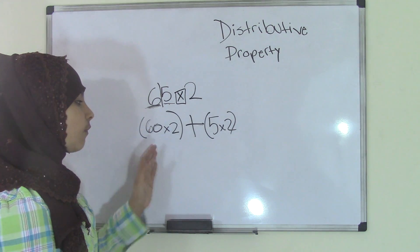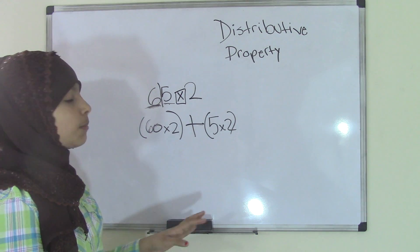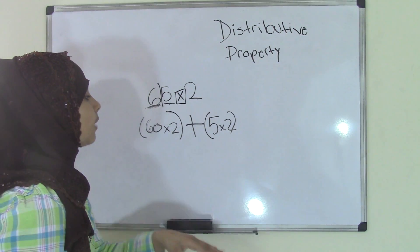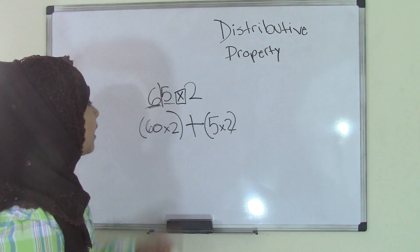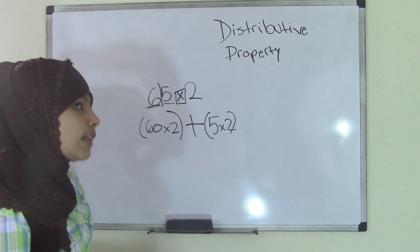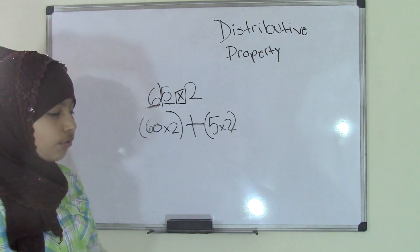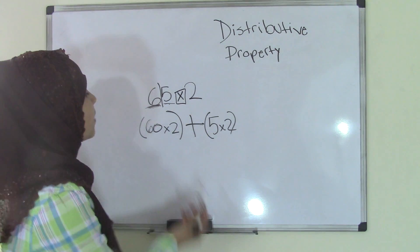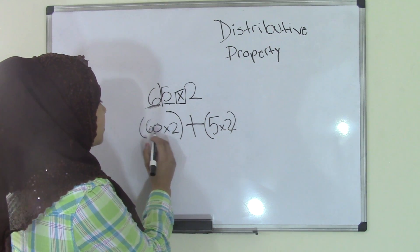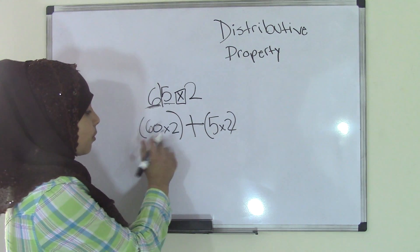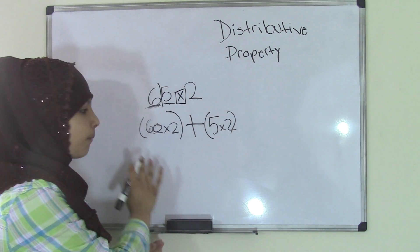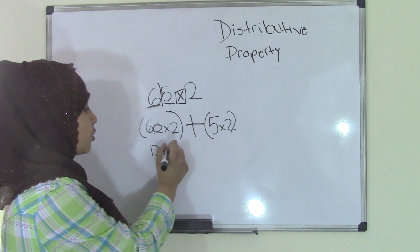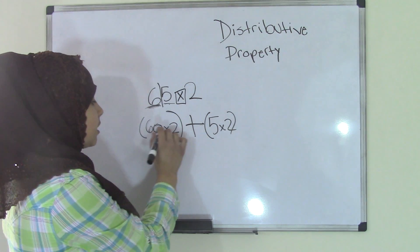All we have to do now is solve the parentheses, because remember, whenever there are parentheses you have to solve them first. You can't just go like 2 plus 5 is 7 — no, that's going to get you a totally different, out-of-the-world answer. So, 60 times 2: if you just remove the 0 for now, 6 times 2 is 12, add the 0, that's 120. So this equals 120.